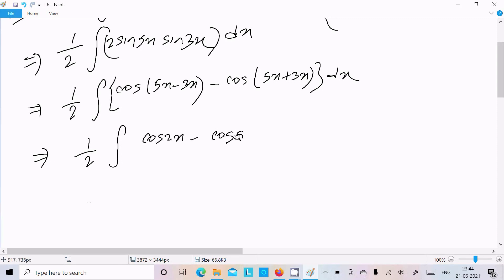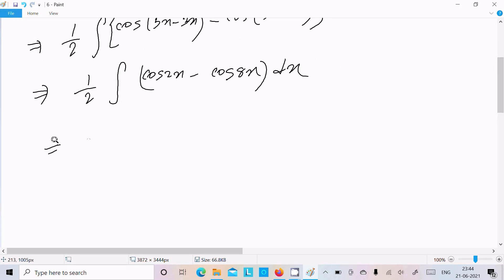Next, 1/2. Let's do the separation: integral of cos 2x dx minus integral of cos 8x dx.